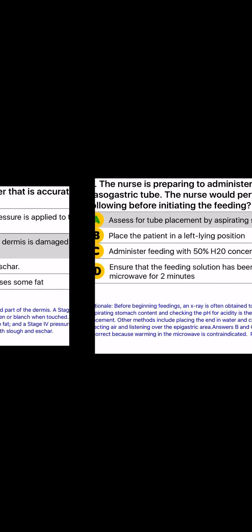Select the stage of a pressure ulcer that is accurately paired with its characteristics. A) Stage 1: only slight blanching when pressure is applied to the skin. B) Stage 2: the epidermis and part of the dermis is damaged or lost. C) Stage 3: the wound has slough and eschar. D) Stage 4: the loss of skin usually exposes some fat.